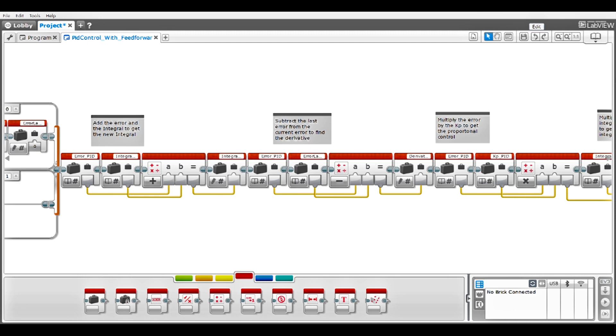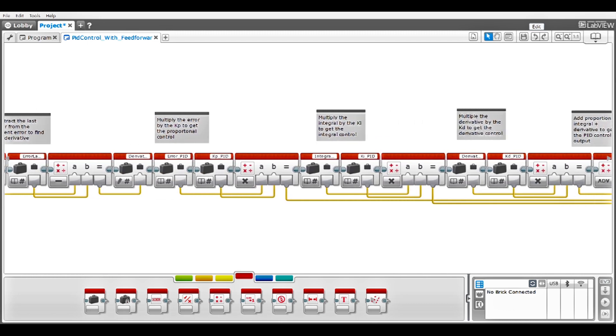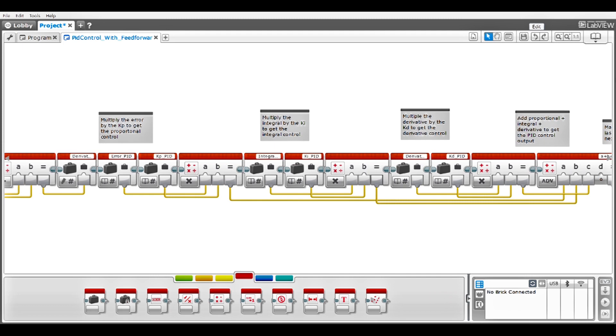The prior loop error is subtracted from this loop's error to calculate the derivative. The proportional control is kp times the error. The integral control is ki times the integral. The derivative control is kd times the derivative.